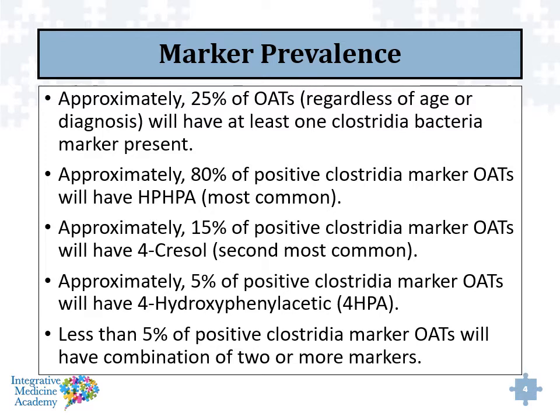Approximately 25% of organic acid tests that you'll do in practice will have at least one Clostridia marker. The most common is the HPHPA. It's not very common to see all three of those positive, but it does happen and it's very significant when it does. Many other OAT tests on the market just don't analyze this section very thoroughly, in my experience.